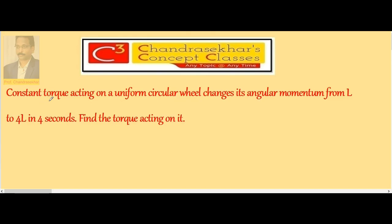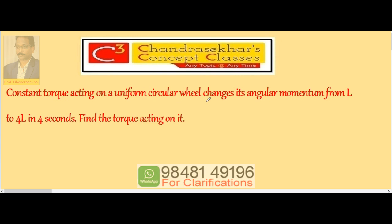A constant torque acting on a uniform circular wheel changes its angular momentum from L to 4L in 4 seconds. Find the torque acting on it. We know the torque is equal to the rate of change in angular momentum: dL by dT.